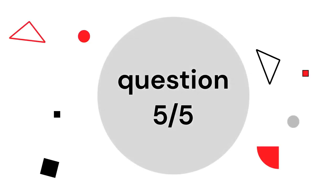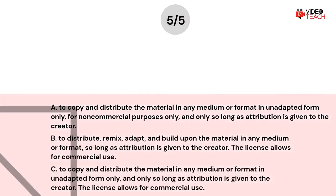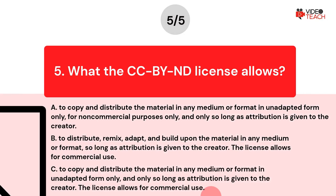Question number five. What the CC BY-ND license allows. Option A: to copy and distribute the material in any medium or format in unadapted form only, for non-commercial purposes only, and only so long as attribution is given to the creator. Option B: to distribute, remix, adapt, and build upon the material in any medium or format, so long as attribution is given to the creator — the license allows for commercial use. Now you have 15 seconds to think about your answer.